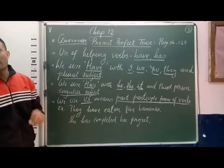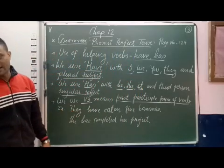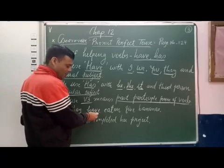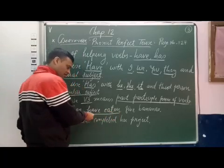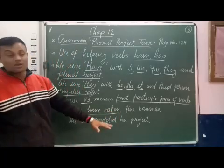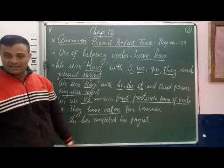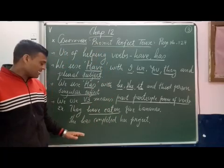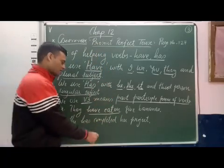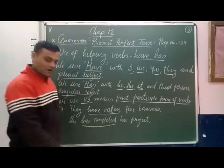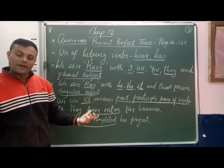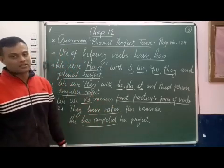They have eaten five bananas. Here 'they' is the subject, 'have' is the helping verb, and 'eaten' is V3. So 'have eaten' shows present perfect tense. Next sentence: She has completed one project. 'Has' is the helping verb, 'completed' is V3, so it is present perfect tense.